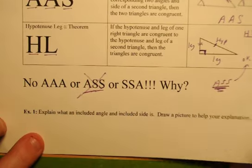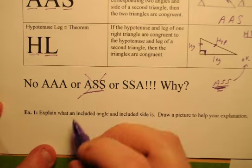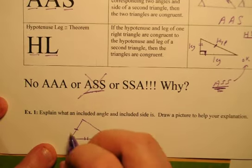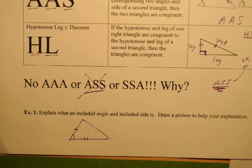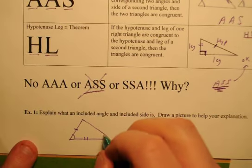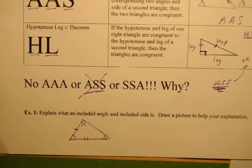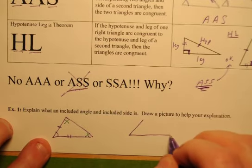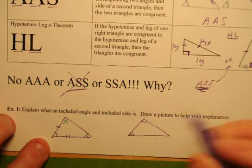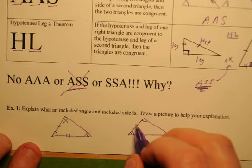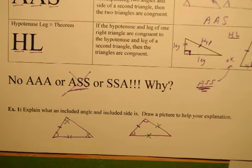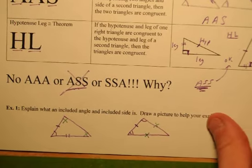Let me explain what an included angle and an included side are. If two sides are marked, the angle between them is the included angle; any other angles are not included. Similarly, if two angles are marked, the side between them is the included side; any other sides are not included. Think of it as 'between.'